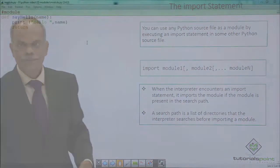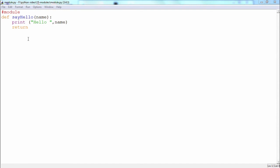I will show you an example. Now in this Python script, I have written a function called say_hello, and I have saved this program by the name module.py. All I want to do is to be able to call this function say_hello from another Python script. Now for that, I have to import this module.py into it.